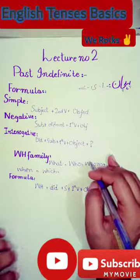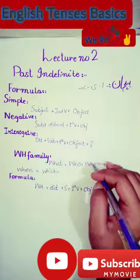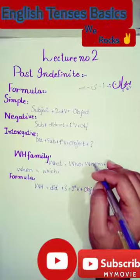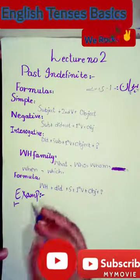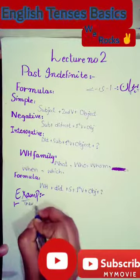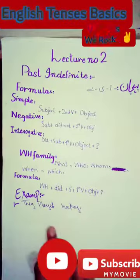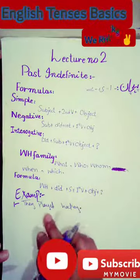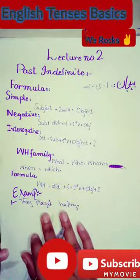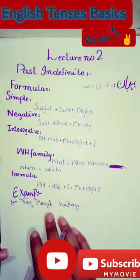Now let's move to examples — simple, negative, and interrogative, including WH-family examples, for Past Indefinite Tense. The first example: simple — 'They played hockey.' Negative — 'They did not play hockey.' Here 'did' is the second form of 'do,' so we use the first form of the verb 'play.' Interrogative — 'Did they play hockey?'